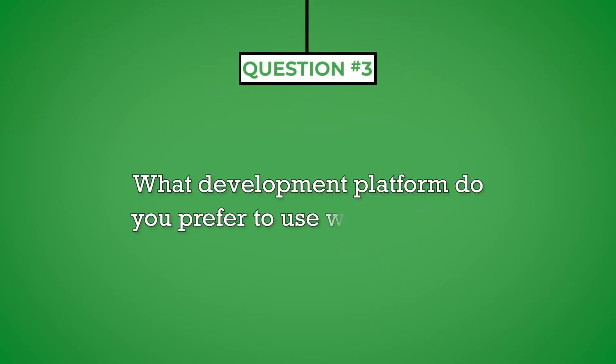Question number three: what development platform do you prefer to use when creating a mobile app? Although you may have a favorite development platform you prefer to work with, your answer to this question should align with the software platforms the hiring organization uses, and you should state that you are comfortable working across many platforms. You can determine the type of software development environments the company uses by conducting research before the interview. This can include looking at their website, reviewing their current applications, and speaking with both current and former developers who have worked at the company.